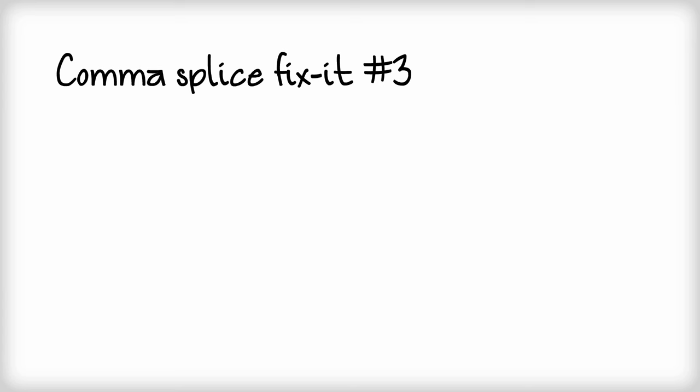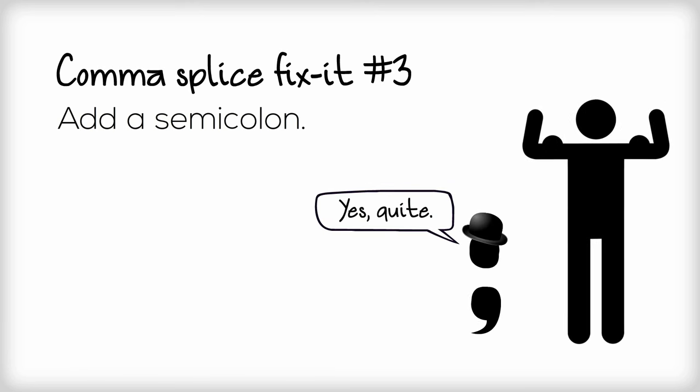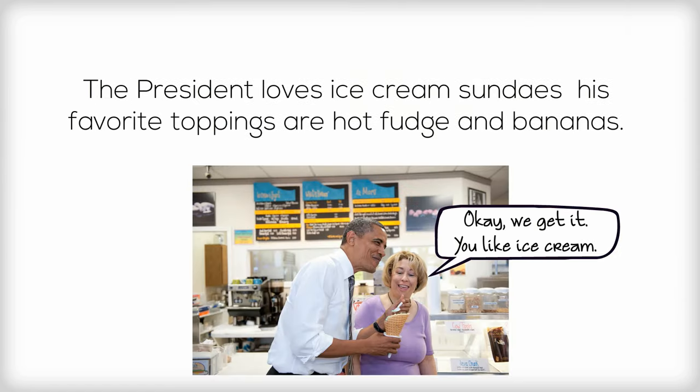Comma splice fix number three: Add a semicolon. You can, of course, use the comma's fancy cousin, the semicolon, to fix a comma splice. It's strong enough on its own that it doesn't need a conjunction or anything else to help support it. To fix a comma splice with a semicolon, all you have to do is put it in the place of the comma. The president loves ice cream sundaes; his favorite toppings are hot fudge and bananas.